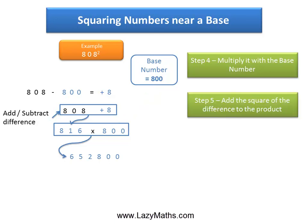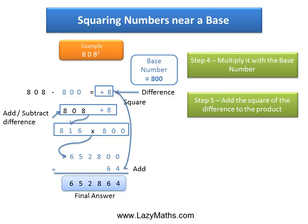And then the last step is to take the 8, square that difference—square of 8 or 8 times 8 is 64—and add it to the product to get the final answer, which is 652,864.